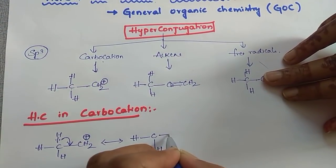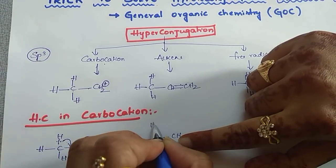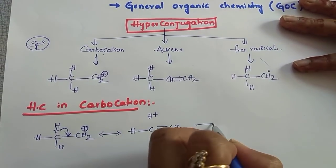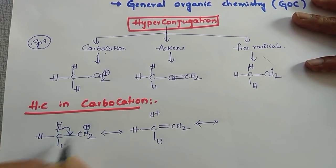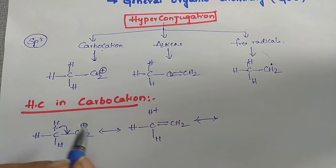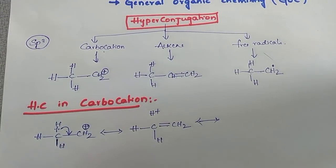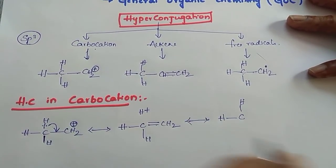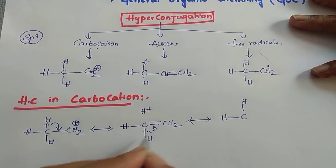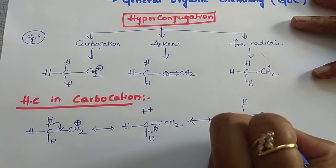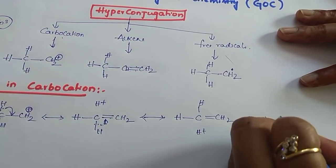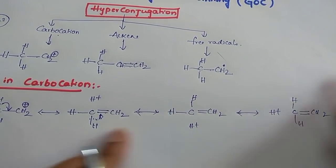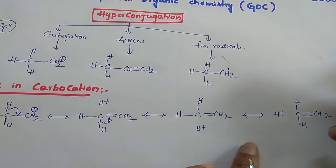The sigma electrons shift to the carbocation: the C–H bond electrons shift, hydrogen gets a positive charge, and a new pi bond forms. Similarly, if a second hydrogen involves in resonance — its sigma electrons are in conjugation with the carbocation — we get another structure: H⁺, with a double bond forming. If the third hydrogen involves, we get yet another structure: H⁺, C=CH₂. In this way, we get different hyperconjugative structures.